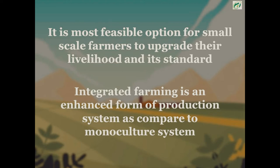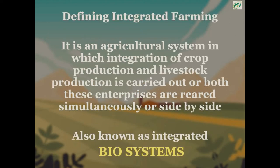Integrated farming is an agricultural system in which the integration of crop production and livestock production is carried out, or both these enterprises are reared simultaneously, side by side. This is also known as integrated biosystems. So in integrated farming, farmers are rearing both crops and livestock on the same land, so that the land and resources are used very effectively.